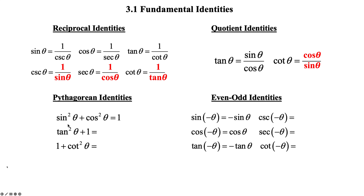How do we find the other two Pythagorean identities? To change sine squared to tangent squared, divide everybody by cosine squared. Sine squared theta over cosine squared theta is tangent squared theta. Cosine squared over itself is 1, and 1 divided by cosine squared theta is secant squared theta, giving us: tangent squared theta plus 1 equals secant squared theta. To find the identity with cotangent and cosecant, divide the original by sine squared theta. Sine squared over itself is 1, cosine squared over sine squared is cotangent squared theta, and 1 over sine squared is cosecant squared theta.